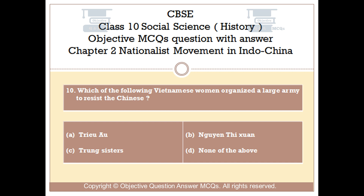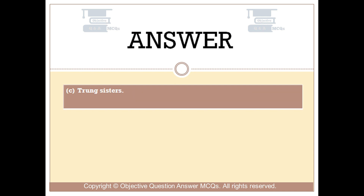Question number 10: Which of the following Vietnamese women organized a large army to resist the Chinese? Option A: Trieu Au. Option B: Nguyen Thi Chai Hsien. Option C: Trung Sisters. Option D: None of the above. The right answer is Option C: Trung Sisters.